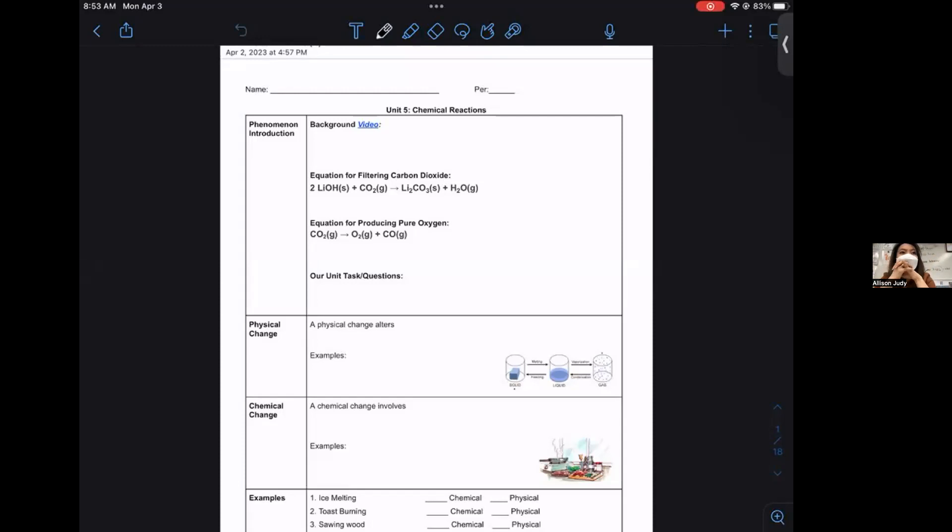Unit two, we started talking about naming compounds, combining atoms. Actually no, we started talking about the periodic table. Unit two was all about the periodic table, understanding what patterns exist between atoms. Then unit three was about, based off of those patterns, how do we combine atoms to build molecules, to build compounds?